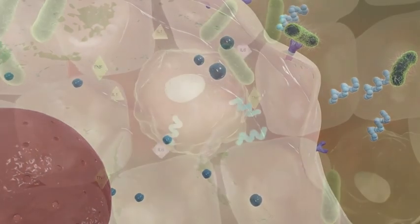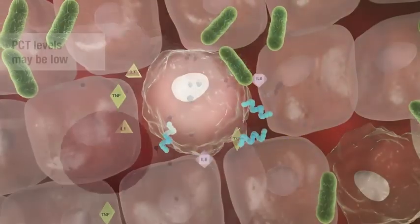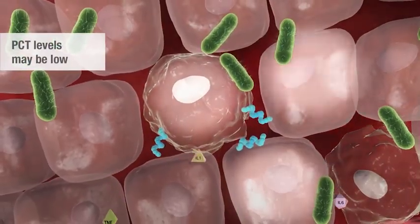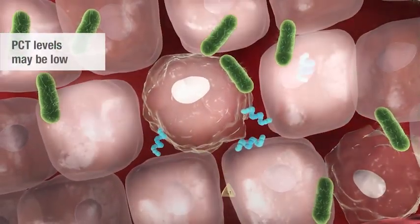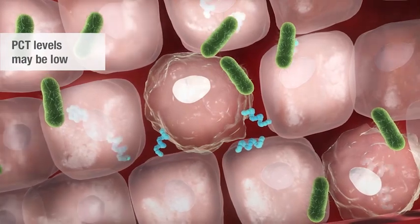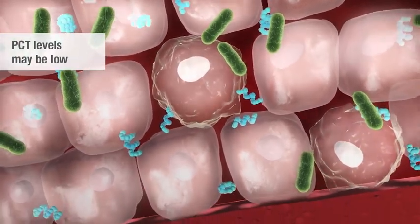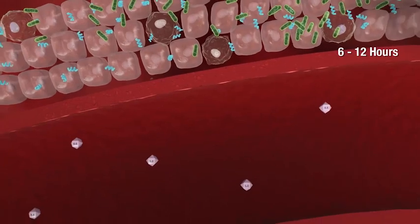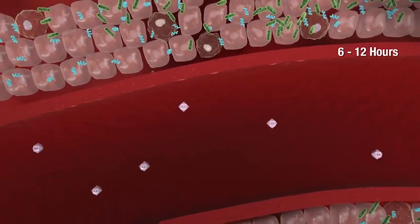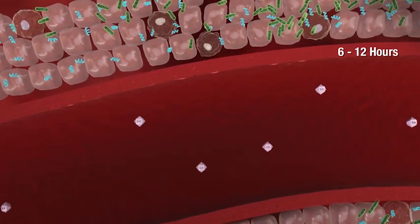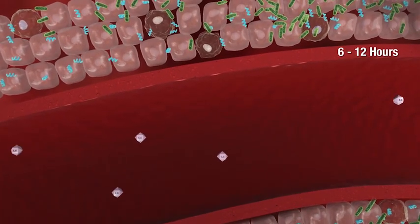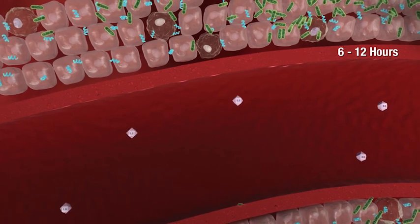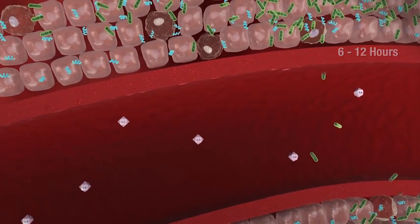PCT leaves the cell and enters the interstitium over the next two to three hours. Since this stimulation is localized, serum PCT levels may be low at this point. If the infection is contained at this phase, PCT levels may continue to be very low and even undetectable in the capillary network.